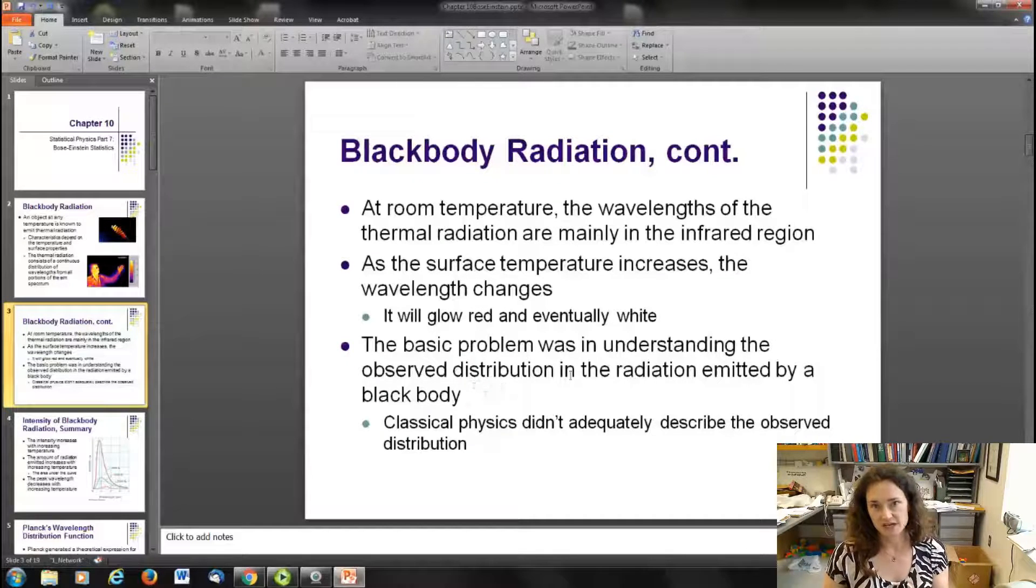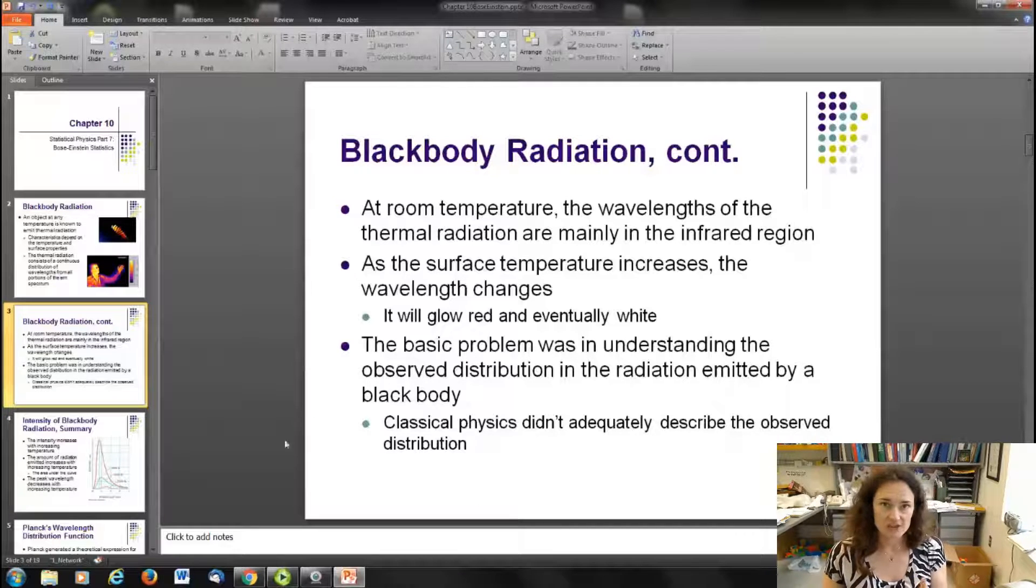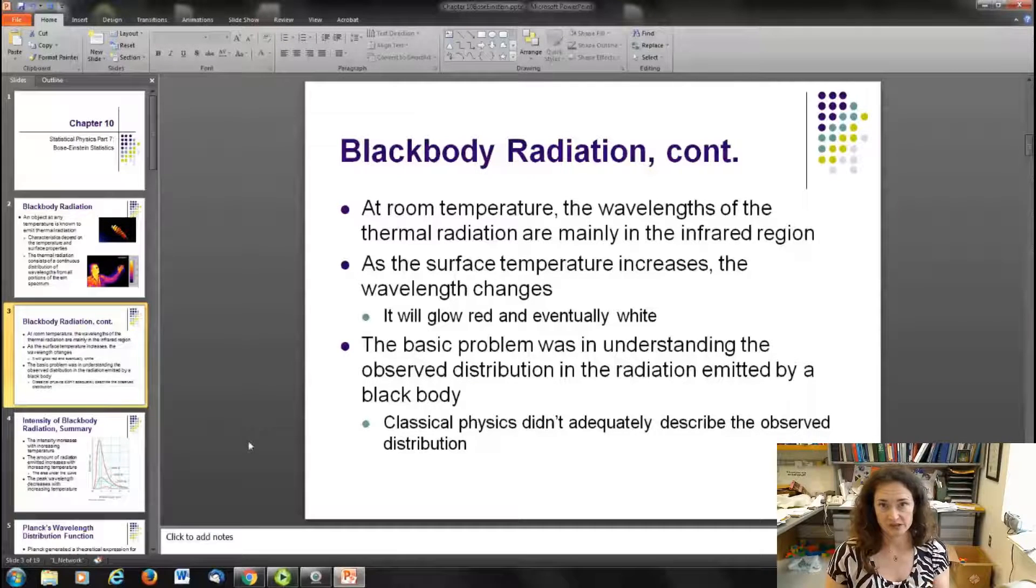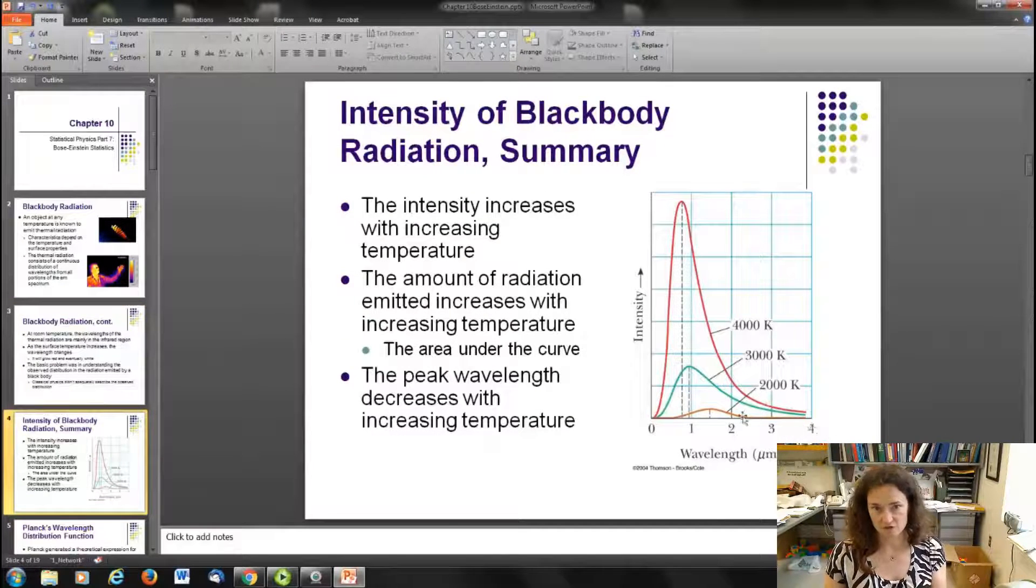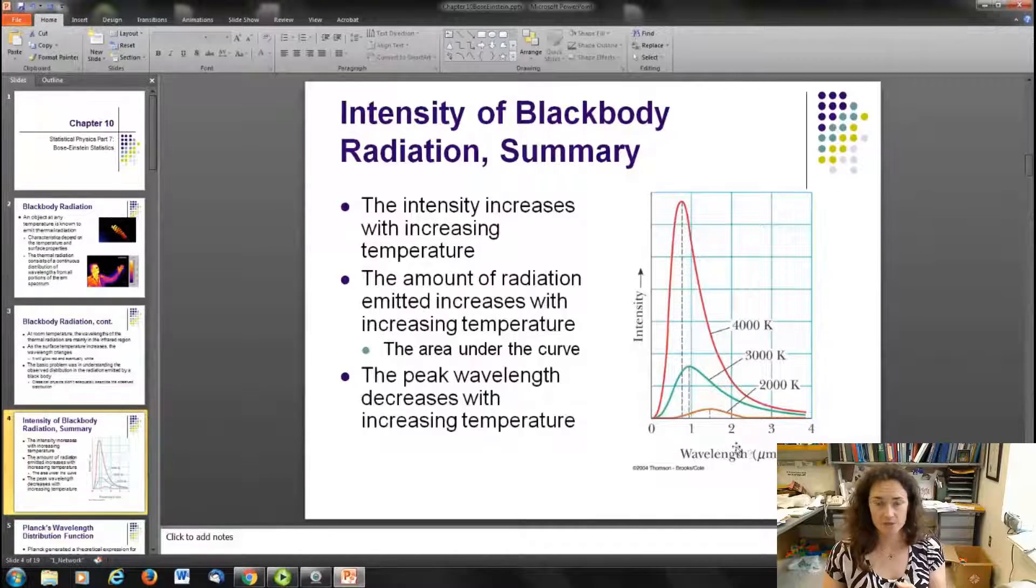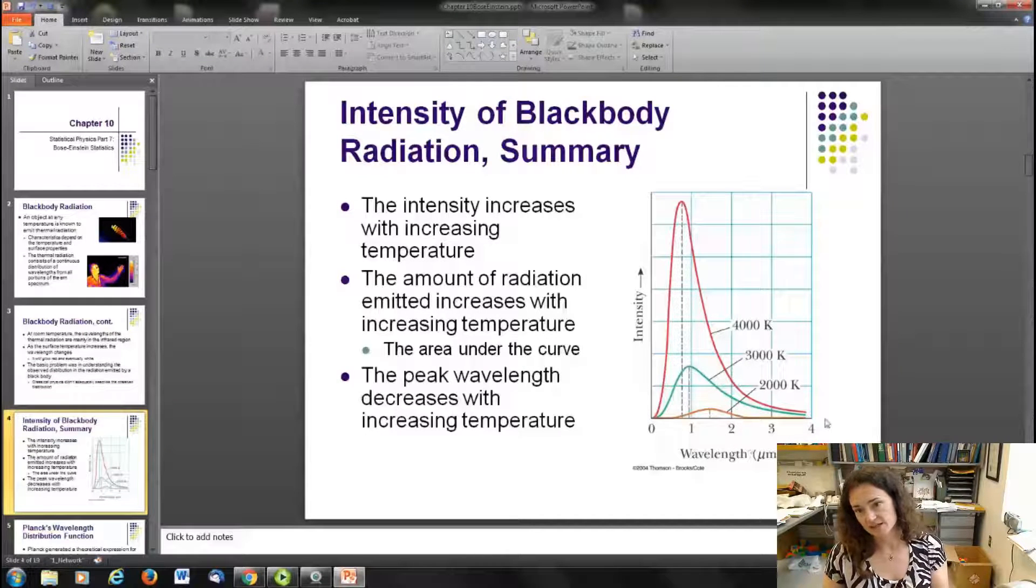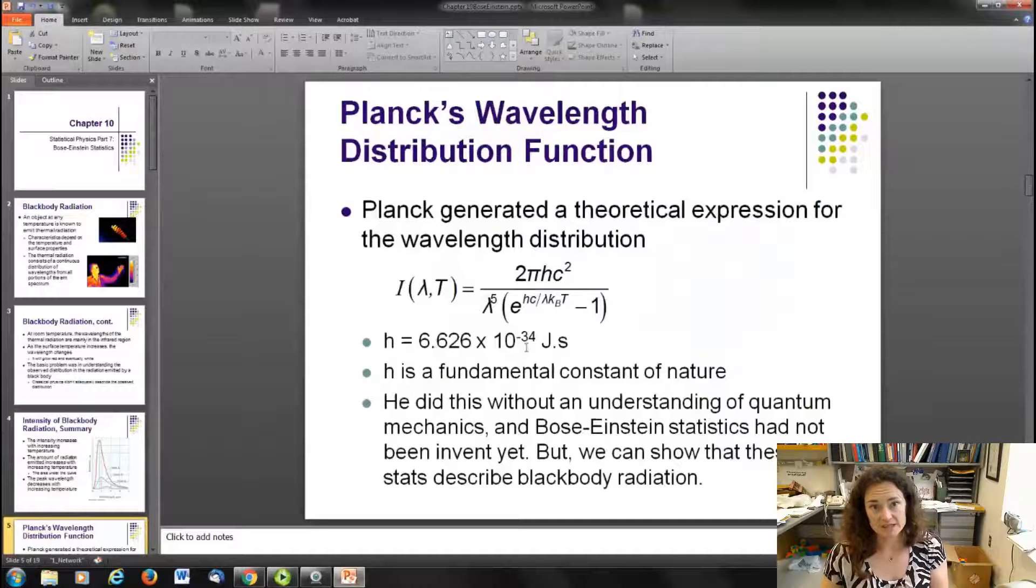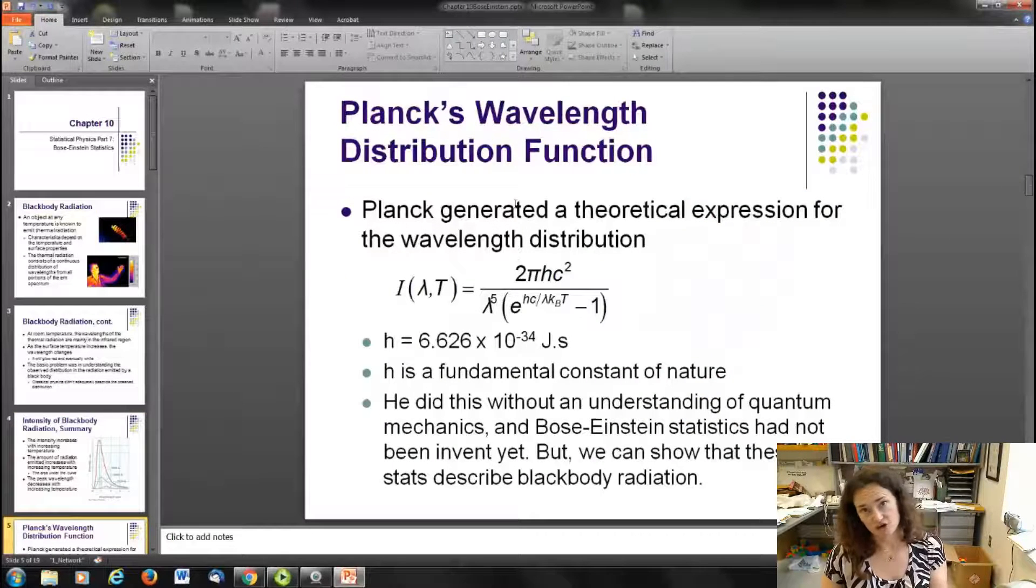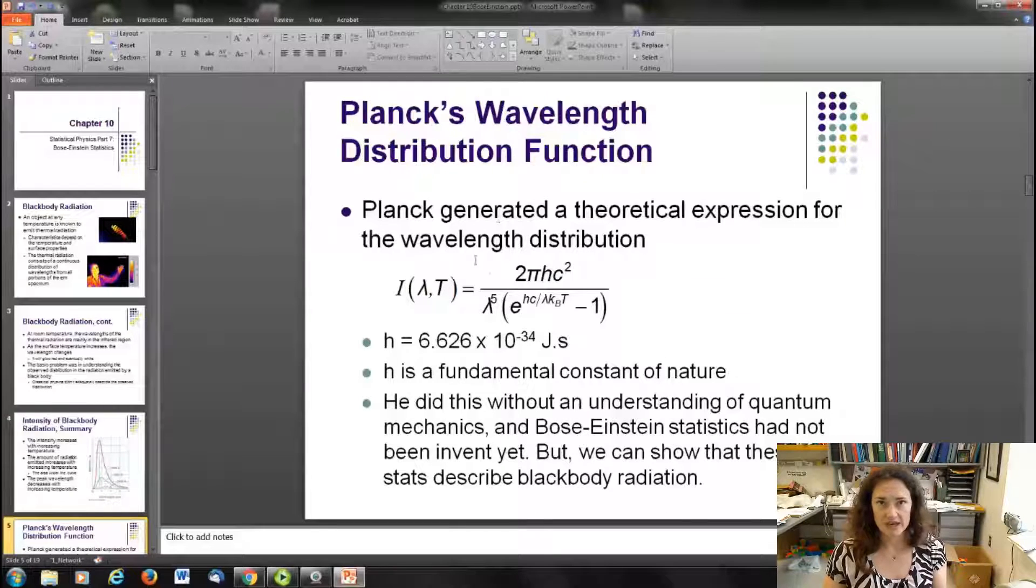Classically, it was difficult to understand why the black body curve had the shape it did. The Rayleigh-Jeans law did the best it could, but ultimately classical physics failed at describing this very characteristic intensity curve for black body radiators. Notice here that as your temperature goes from 2,000 Kelvin to 4,000 Kelvin, the wavelength gets shorter and shorter, moving there to the left. What Max Planck did is he fit the curves and then came up with a theory that best described why the curves act the way they do.